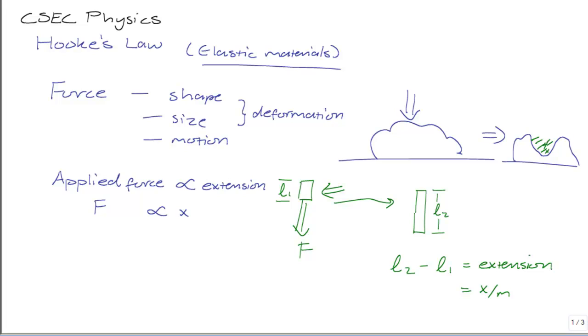We can actually make this relationship into an equation by adding a proportionality constant. This means that F is equal to some constant K times x. And this essentially is Hooke's law. Hooke's law states that the applied force is equal to some constant, multiplied by x, your extension.